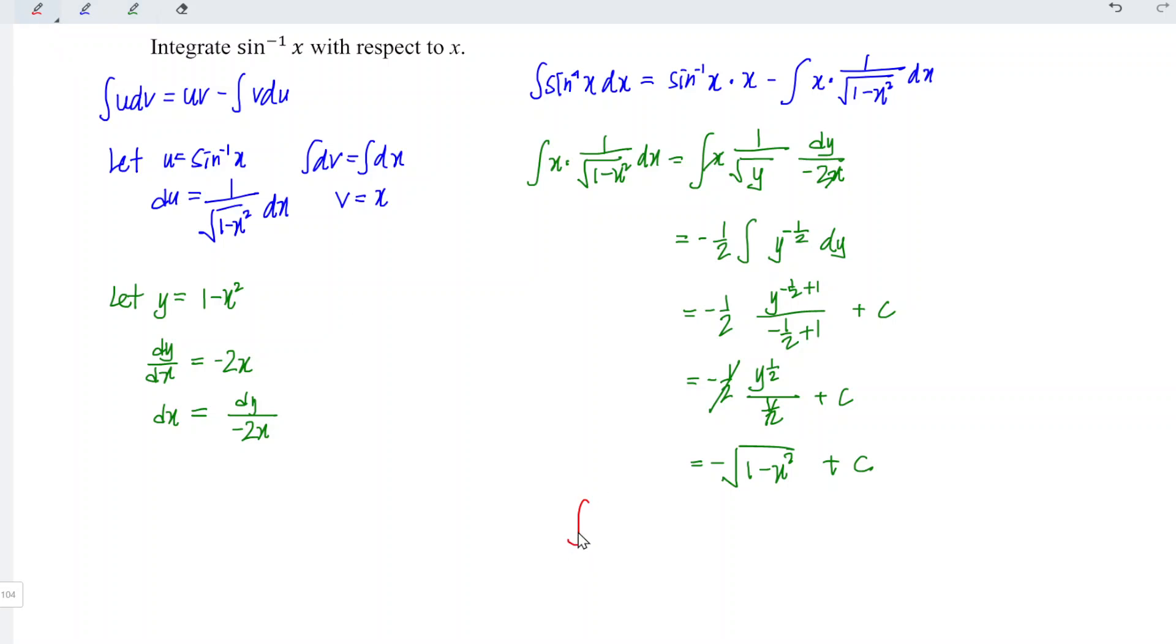So which means that we have integrate of arcsin x dx is equal to x times sin inverse x minus negative. So negative negative becomes positive square root of 1 minus x square. Add the constant c.